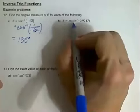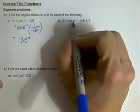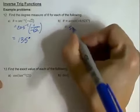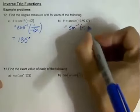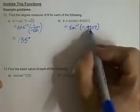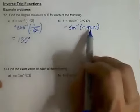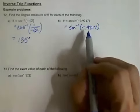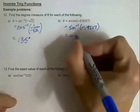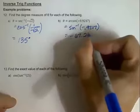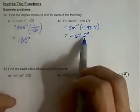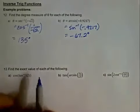Remember that the other notation for the inverse trig functions is to have 'arc' in front of them. This is the same as the inverse sine of negative 0.9217. This is one we could just do on our calculator — we're looking for a degree measure, so leave the calculator in degree mode. This is going to give us a negative angle: negative 67.2 degrees. Since the problem didn't ask for angles in any certain interval, it's fine for it to come out negative.